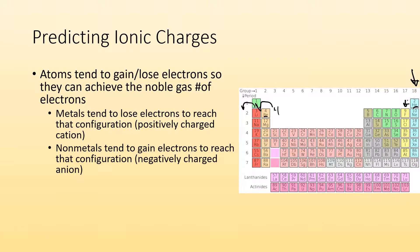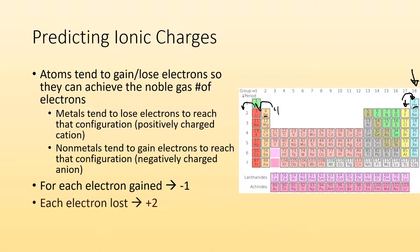Non-metals go the opposite way. Fluorine is almost like neon — it has nine electrons and neon has ten. If only it could get one more electron to be like neon! So it gains electrons and becomes negatively charged — an anion. For each electron gained, we give it a minus one charge. For each electron lost, it becomes plus one.